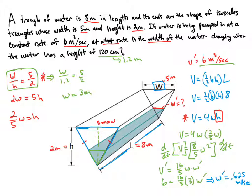Okay. So what that is telling us is that is the rate that the width of the water is changing at the moment in time when the height is 120 centimeters or 1.2 meters.